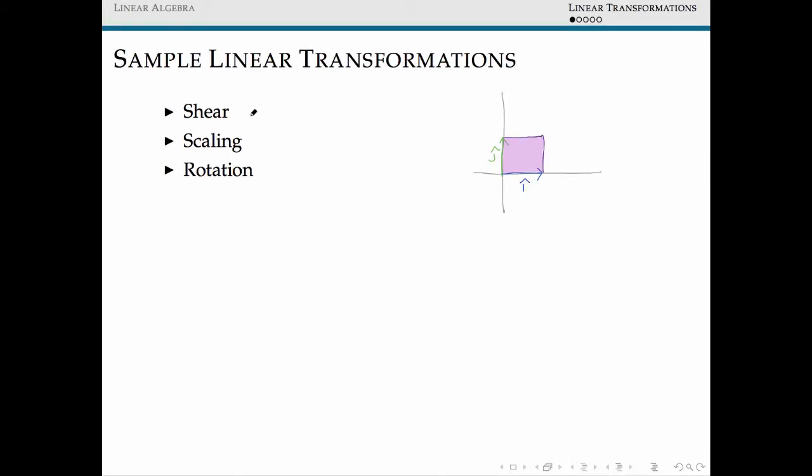A transformation we haven't seen yet is something called a shear transformation, where we're going to start with a matrix A, leave all of our coordinates along the diagonal the same, set my coordinate here equal to 0, and make our upper right coordinate 2. What a shear transformation is going to do is transform our unit square into something that looks like this.